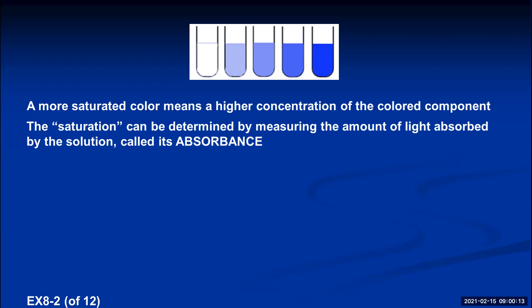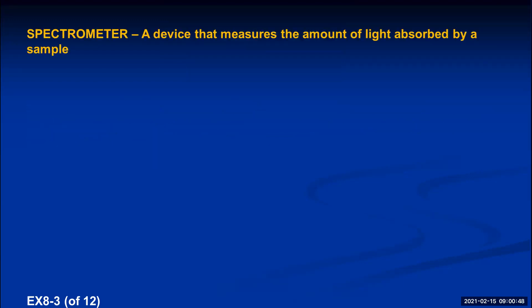Our eye is a type of spectrometer — a device that can determine saturation. We can clearly see the solution on the very right must have had the most copper-2 sulfate pentahydrate, whereas the solution on the left must have had the least. However, our eyes are not quantitative. We can't tell that the rightmost sample is 8% copper-2 sulfate pentahydrate and the leftmost is 1%. So we're going to use a quantitative device called a spectrometer, which measures exactly the amount of light absorbed by a sample.